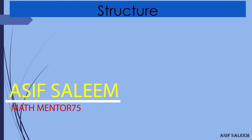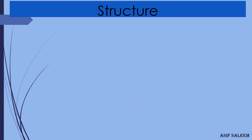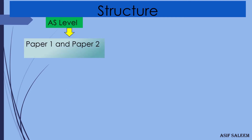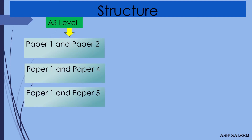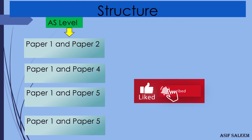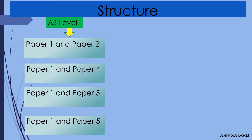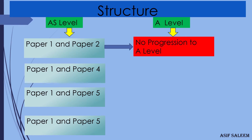Let's have a quick summary. For AS students planning two papers, you have three options: Paper 1+2, Paper 1+4, or Paper 1+5. If you are planning for A-Level and have done Paper 1 and 2, unfortunately that will not lead you to A-Level — it's a full stop. You'll receive an AS Mathematics certificate, but A-Level Mathematics is done.